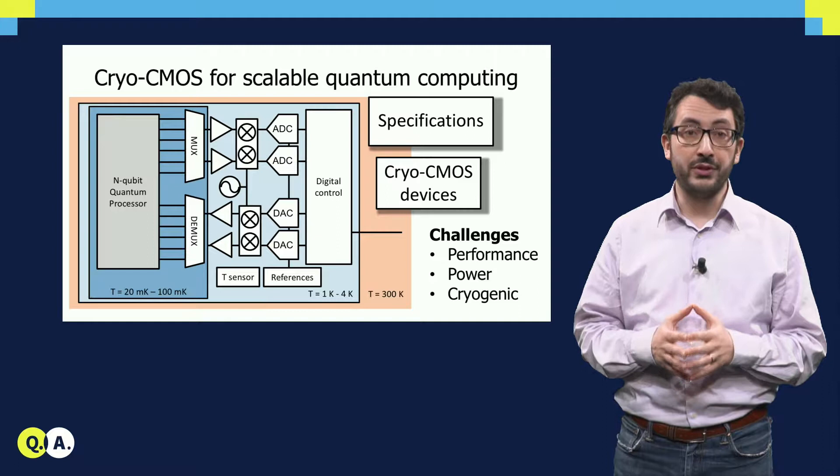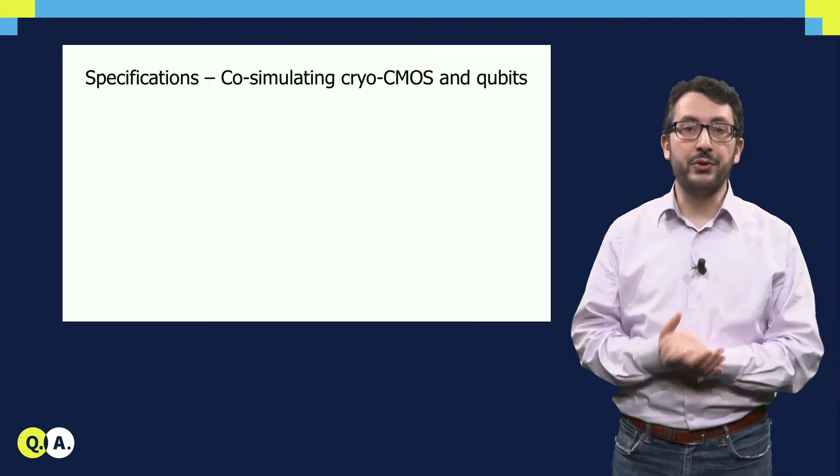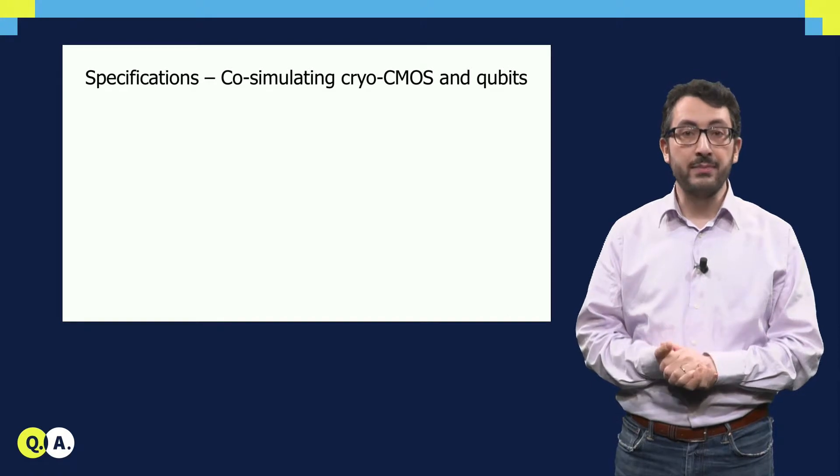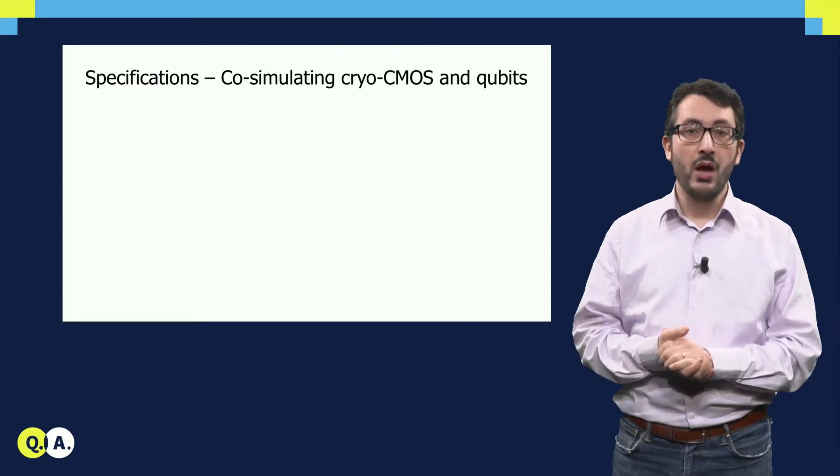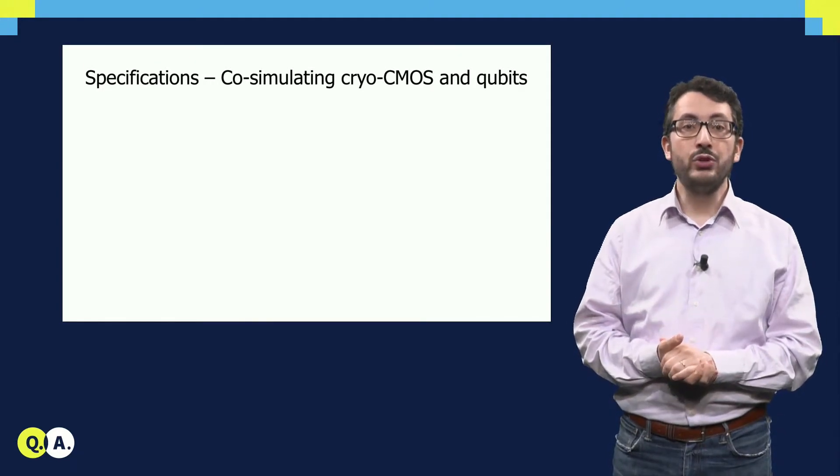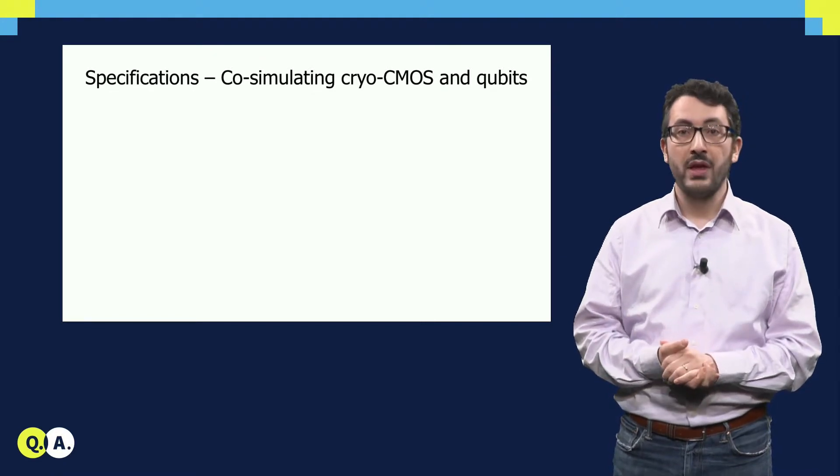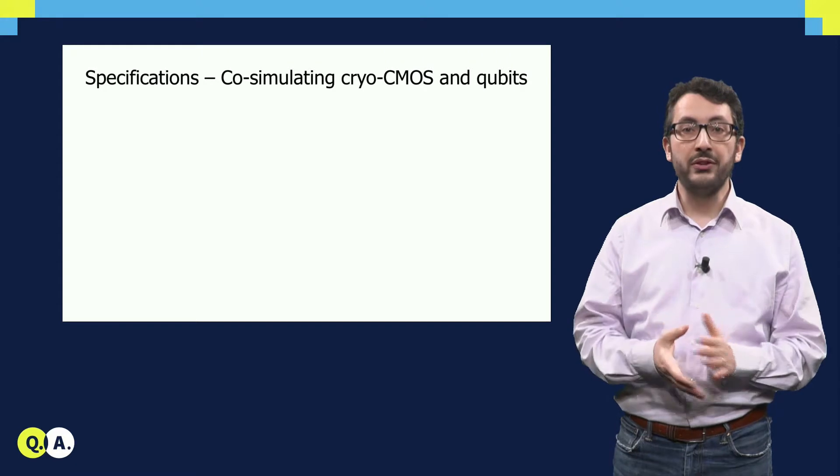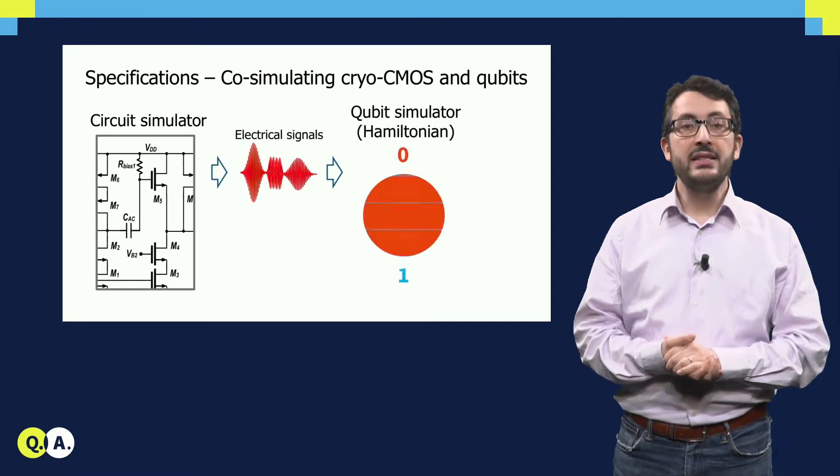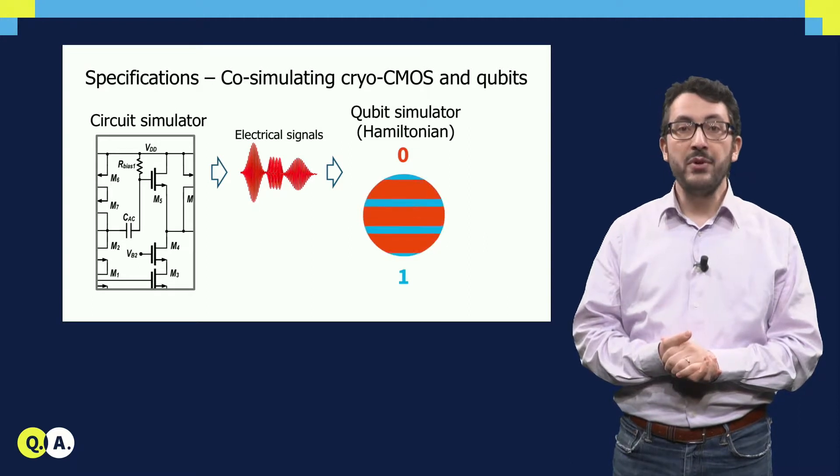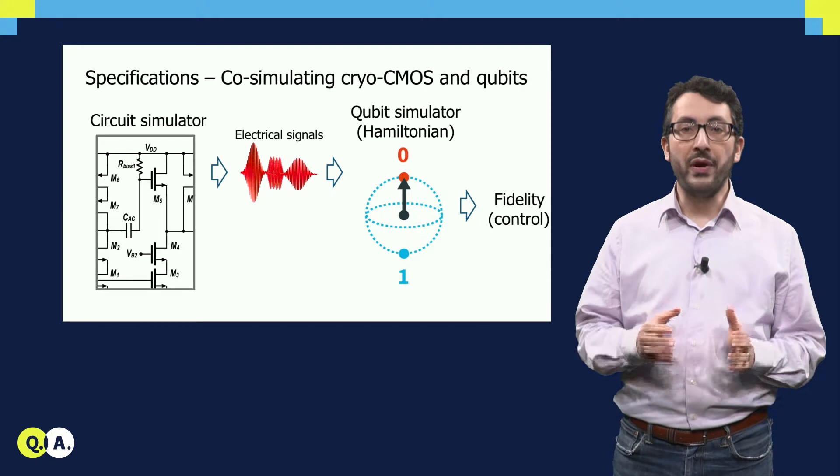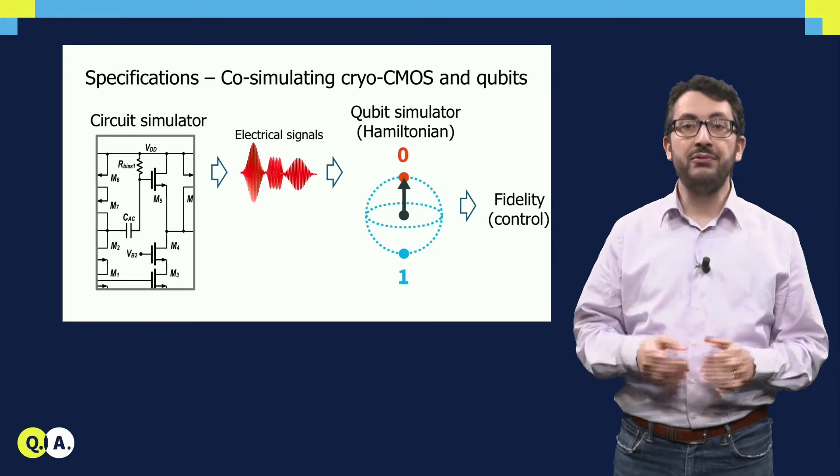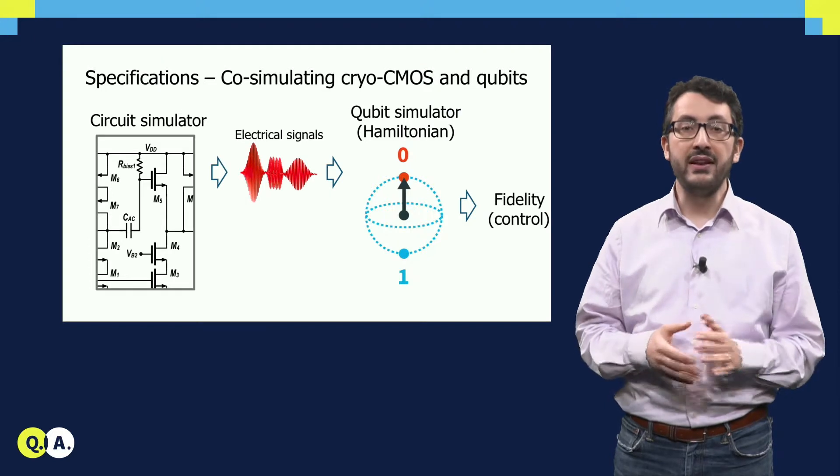Let's look at the specifications first. Specifications are very important. Since we have to build a tailor-made system, we have to be aware what the impacts are of any choice in the electronics on the qubit performance. What researchers typically do is to simulate cryo-CMOS electronics and qubits together. The main idea is to start from a circuit simulator where you can simulate the electronics. This simulator produces electrical signals that can be fed to a qubit simulator, which is basically a full physics simulator using the Hamiltonian description of the qubits. From operating the qubits in this way, you can derive what the fidelity of the full quantum computer is, at least for the control part.